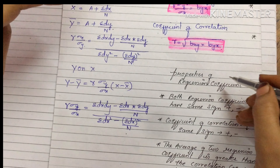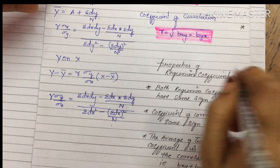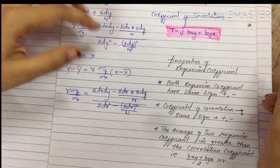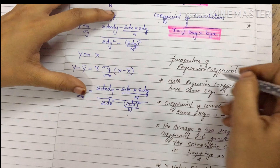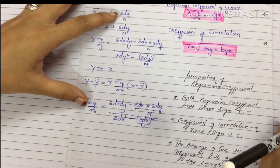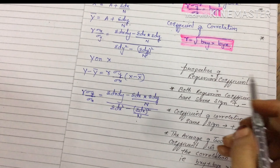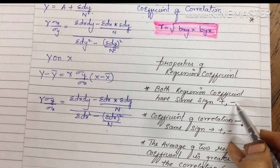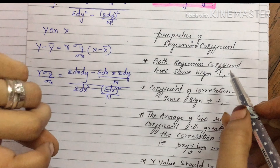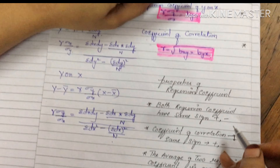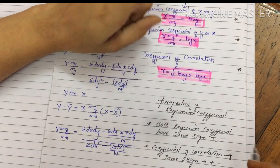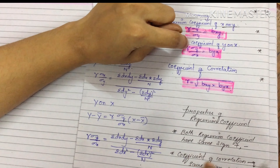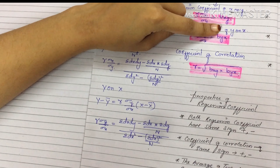Let us see the properties of regression coefficients. First, we need to understand them before solving problems — it will be easy to understand the questions. Property one: both regression coefficients have the same sign. Both bxy and byx must have the same sign — either both positive or both negative.